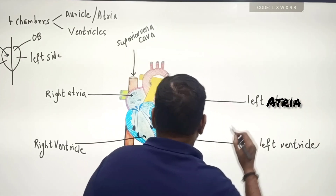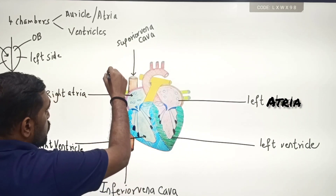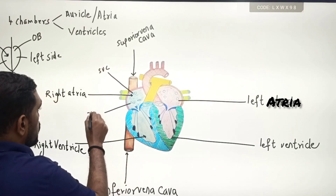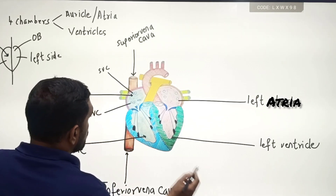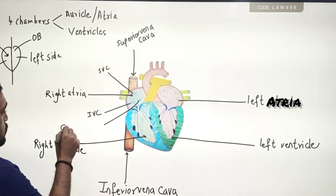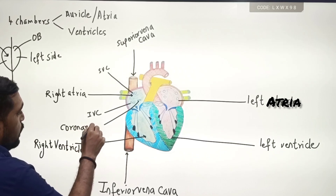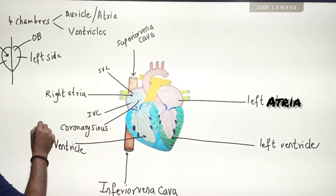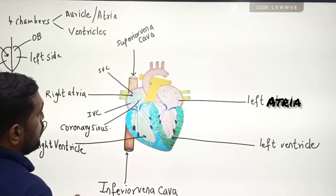Most importantly, the right side receives deoxygenated blood from three openings. The first opening is the superior vena cava. The second opening is the inferior vena cava. The third and most important one is called the coronary sinus. The coronary sinus brings deoxygenated blood from the heart itself.